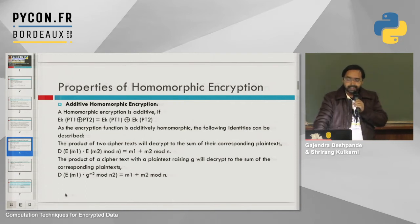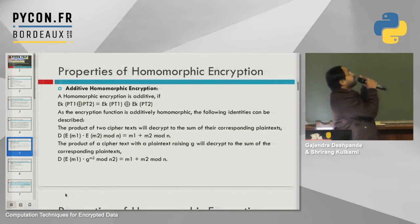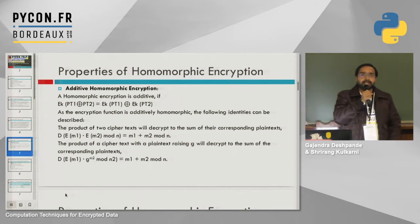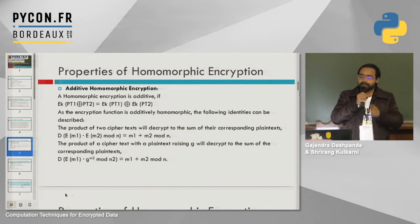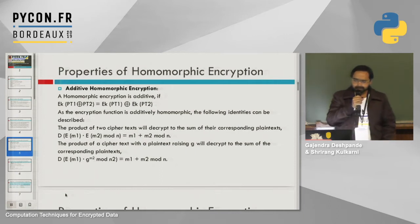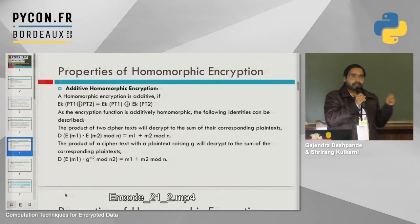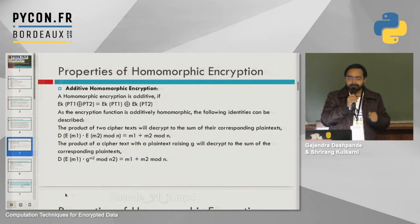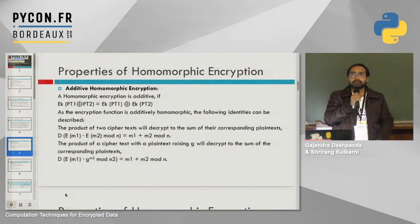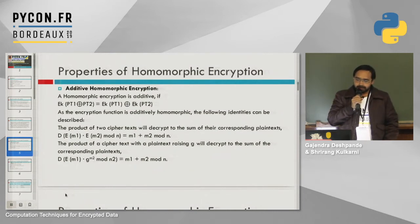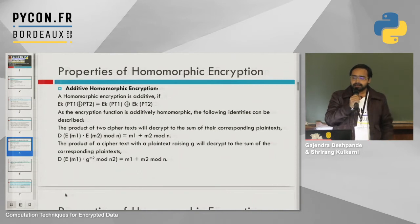In additive homomorphic encryption, the encryption of plaintext 1 plus plaintext 2 is equivalent to the encryption of plaintext 1 plus the encryption of plaintext 2. The additive property also states that the product of two ciphertexts will decrypt to the sum of their corresponding plaintexts — that is, decryption of (encryption of message 1 multiplied by encryption of message 2) mod n equals message 1 plus message 2 mod n. Similarly, the product of a ciphertext with a plaintext raised to g will decrypt to the sum of the corresponding plaintexts.